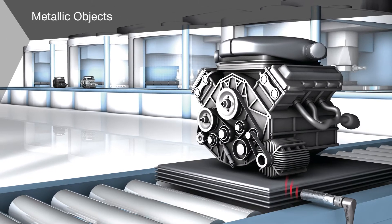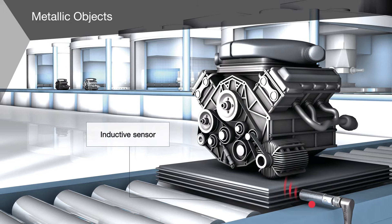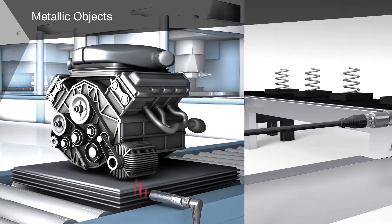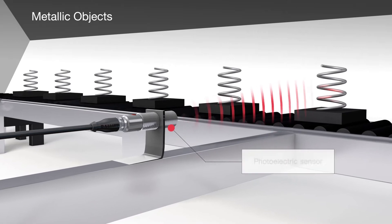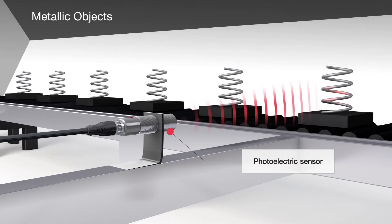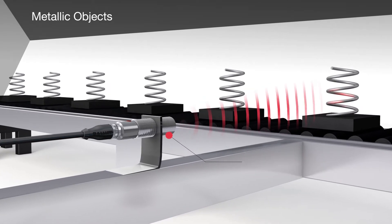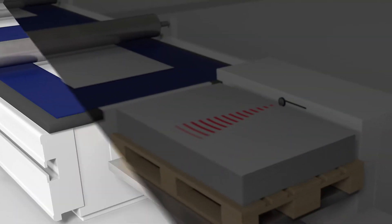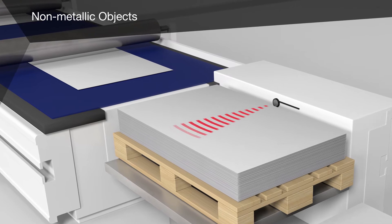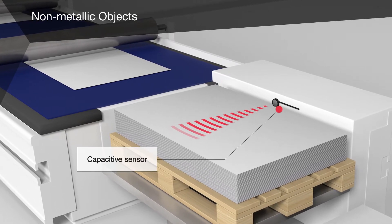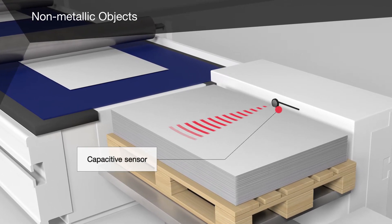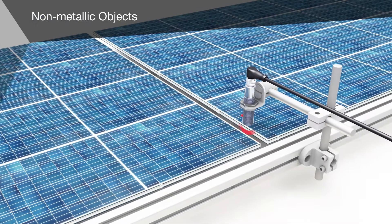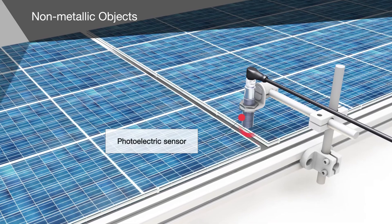Metallic objects can be detected, for example, using an inductive sensor — seen here detecting the workpiece carrier as it passes by — or using a photoelectric sensor which detects the passing steel springs. For non-metallic objects, a capacitive sensor is available, used here to detect the paper stack height, or a photoelectric sensor whose task is to detect the photovoltaic cells.